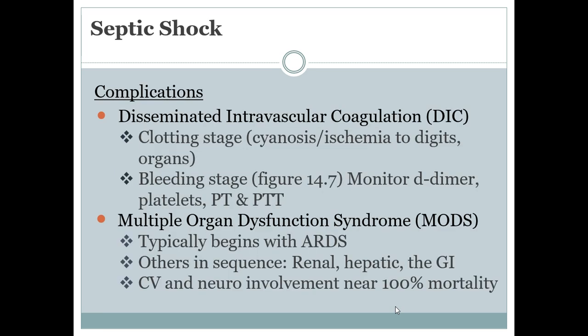Some complications — DIC, or Disseminated Intravascular Coagulation, is the hematological disorder most commonly caused by sepsis. There are two stages: the clotting or initial thrombotic stage and the bleeding stage. The clotting stage presents with cyanosis and ischemia in the fingers, toes, and tip of the nose. Organ ischemia may also exist. Large amounts of thrombin are produced, and this stage can last hours or even several days.